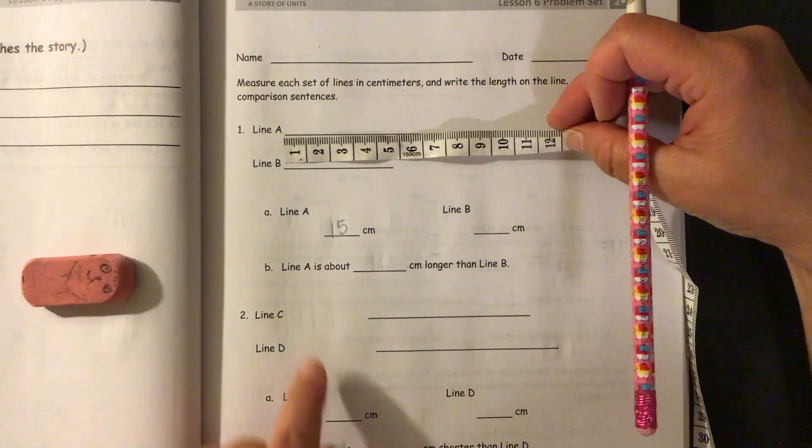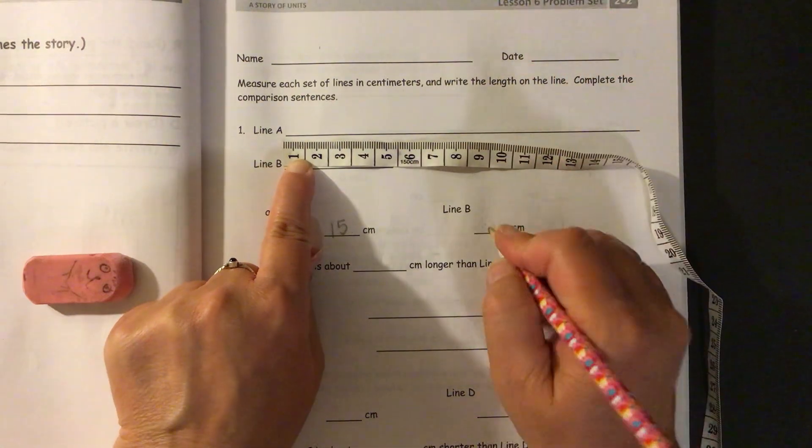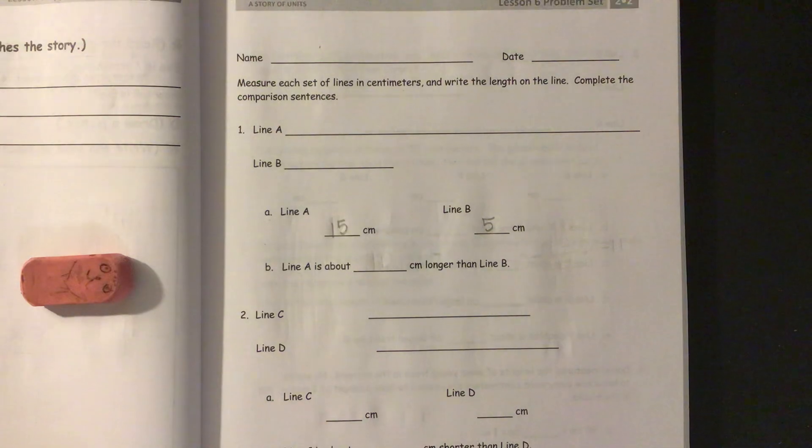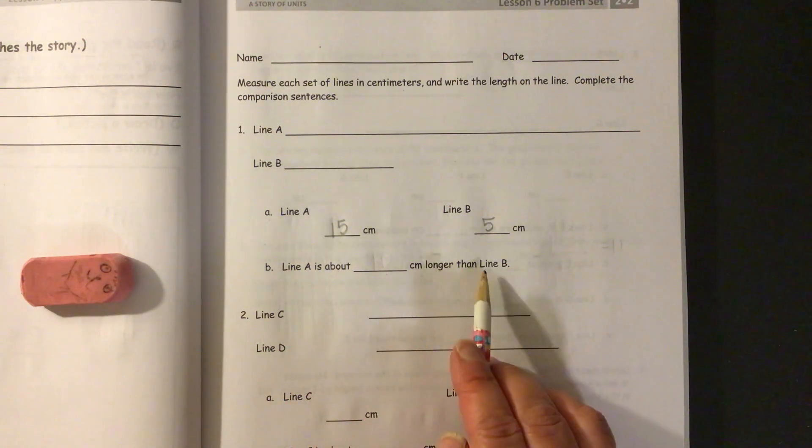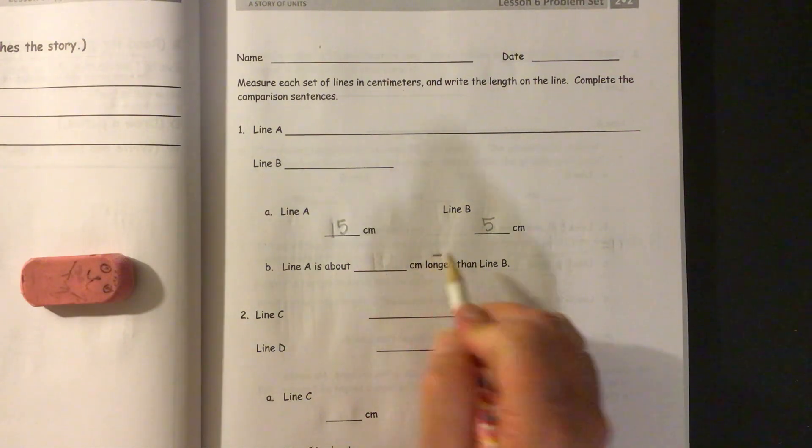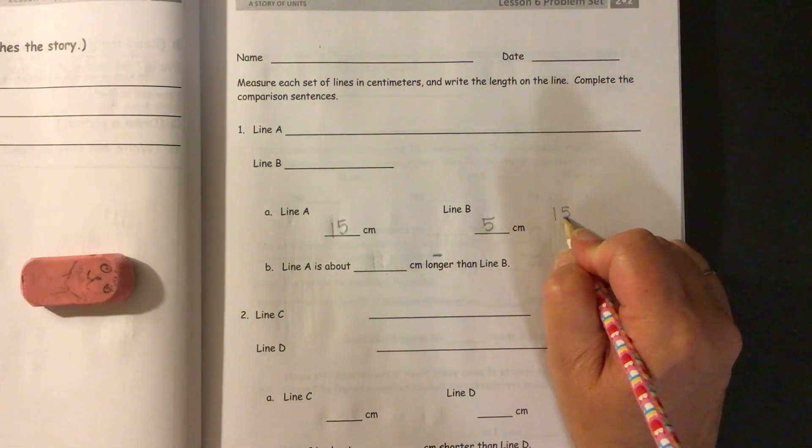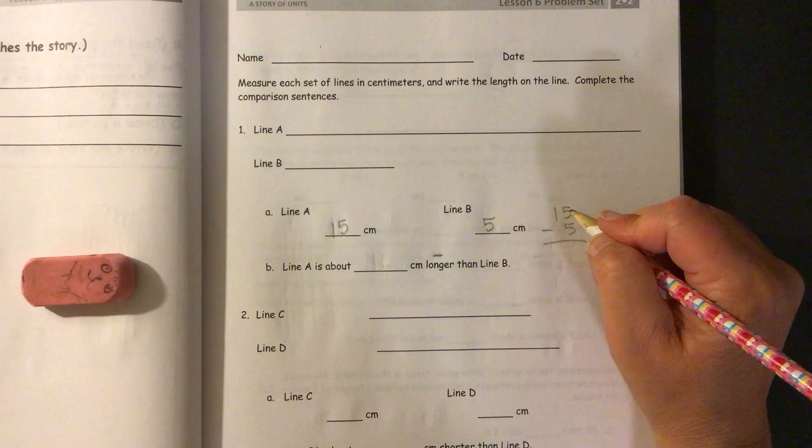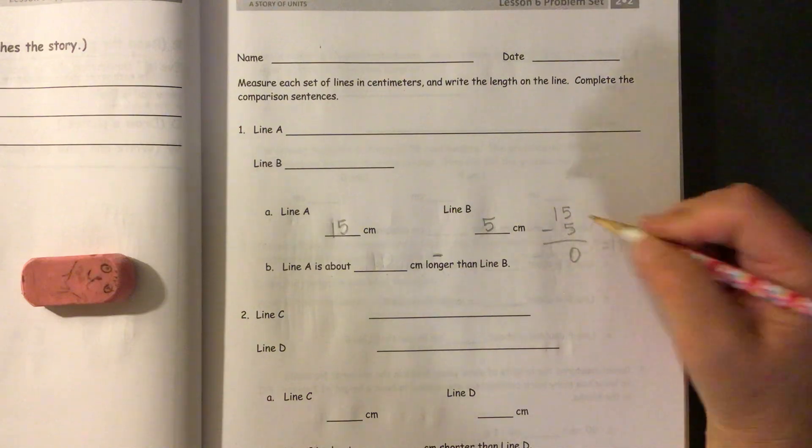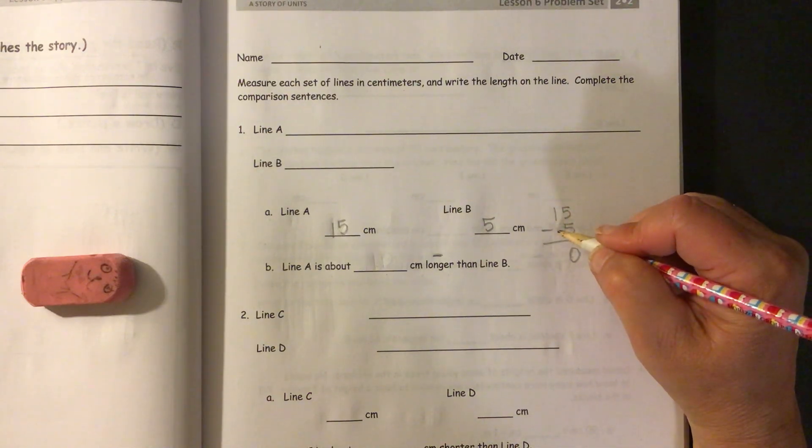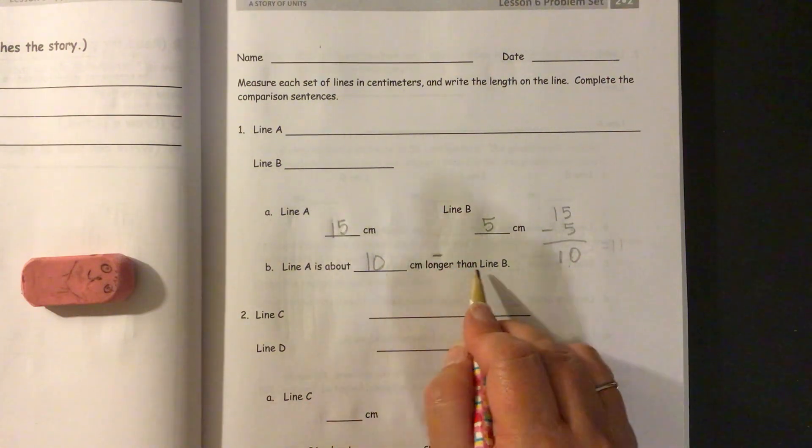Then we need to measure B. And that's almost five centimeters, so we'll go with five centimeters here. And then line A is about blank centimeters longer than B. So we're comparing longer, so that means we're subtracting. So we do 15 minus five. And if we go taking away ones first, five minus five is zero. And one minus nothing is still one. So line A is about 10 centimeters longer than line B.